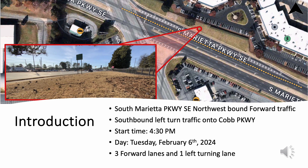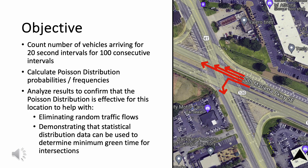The Poisson distribution is described as a statistical tool used to predict the number of occurrences of an event, such as vehicle arrivals, within a given time interval. This is often applied to estimate the number of vehicles arriving at an intersection during a cycle length. For us, we will be looking at vehicles arriving in 20-second intervals for 100 consecutive intervals.